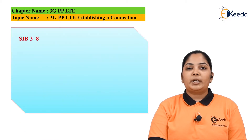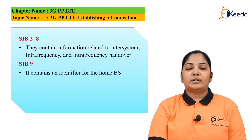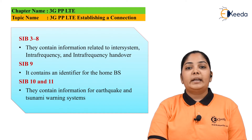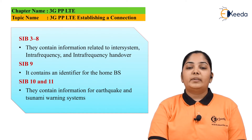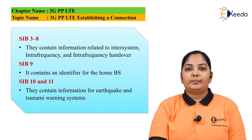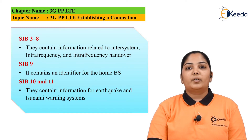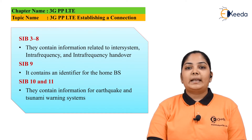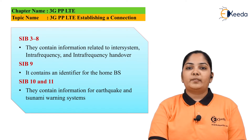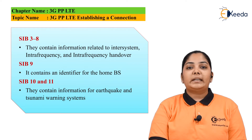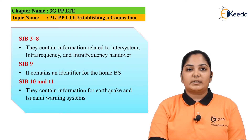SIBs 3 to 8 contain information related to inter-system, inter-frequency, and intra-frequency handovers. SIB 9 contains an identifier for the home base station. SIB 10 and 11 contain information for earthquake or tsunami warnings and have been specifically allotted for emergency services.